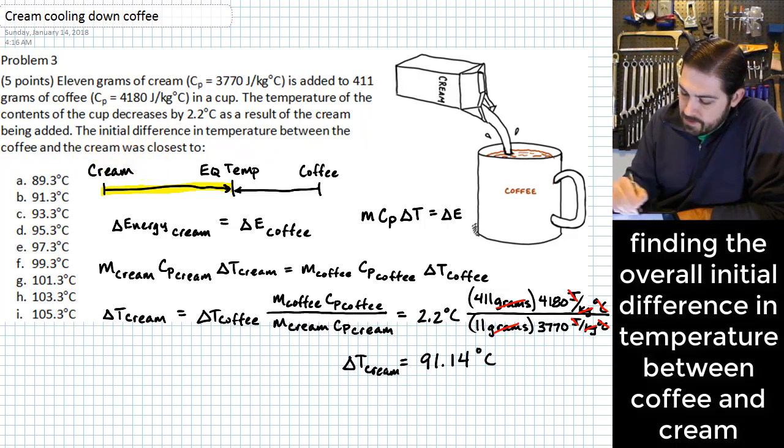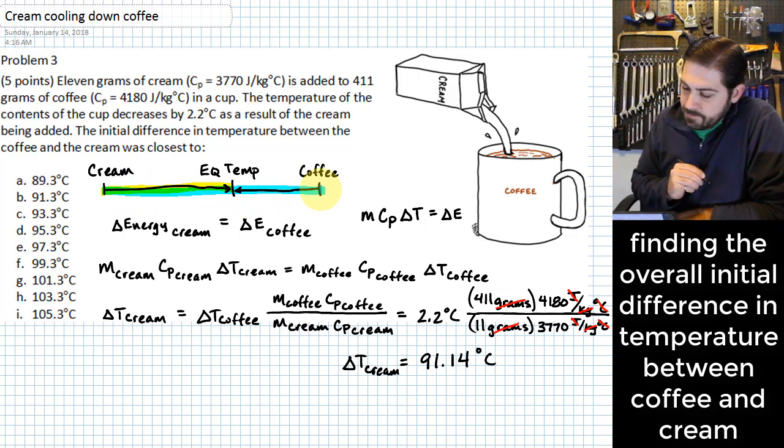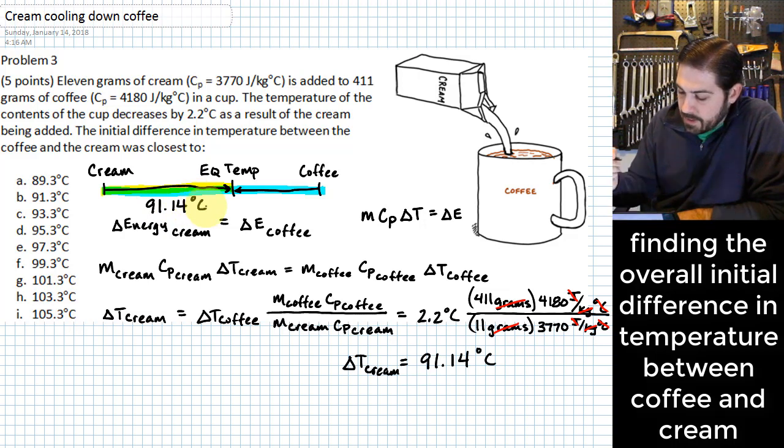That would be this entire difference. So that means we need to add what we figured out here, which is 91.14 degrees C. We need to add to that the initial difference that we had from the initial temperature of the coffee down to the equilibrium temperature, which is 2.2 degrees C.